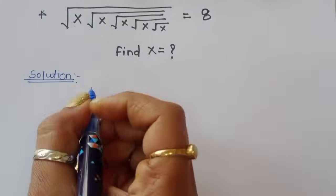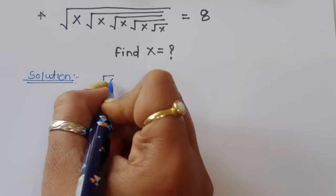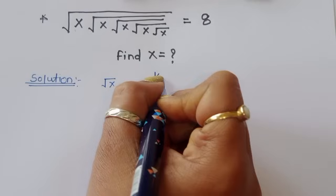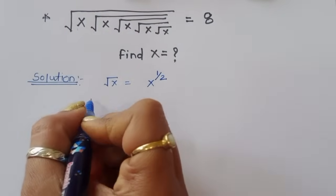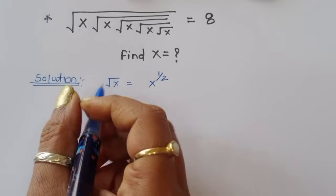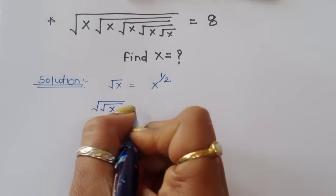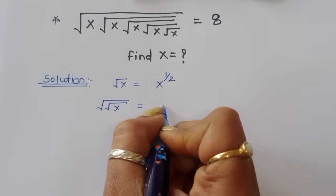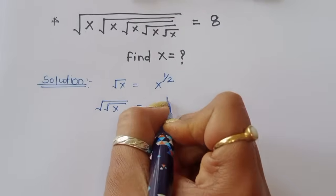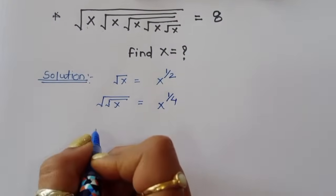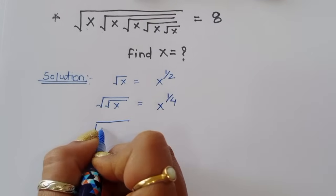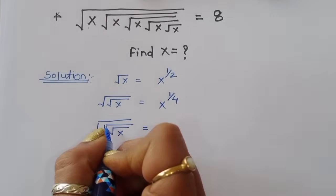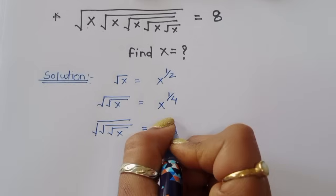We know that square root of x can be written as x power 1 by 2. If there is square root of square root of x, we write 1 by 2 times 1 by 2, so x power 1 by 4. For triple square root of x, it becomes x power 1 by 2 times 1 by 2 times 1 by 2, which is x power 1 by 8.